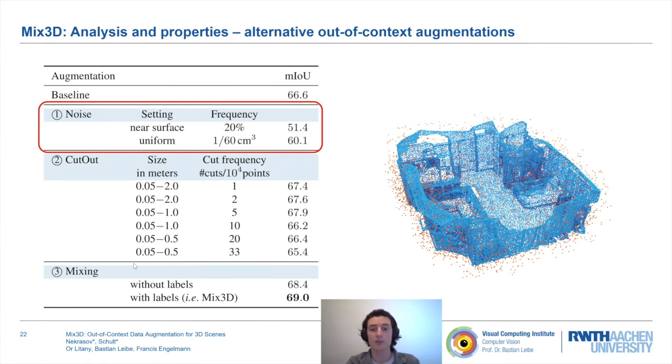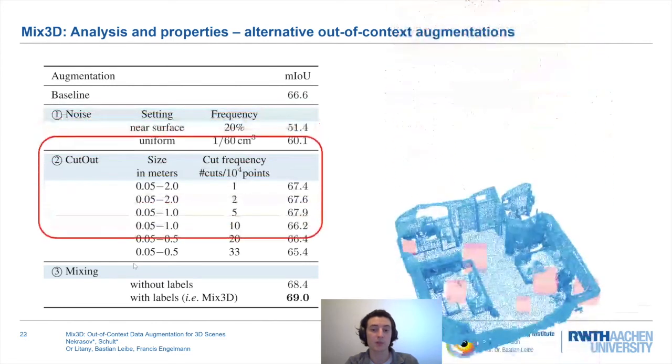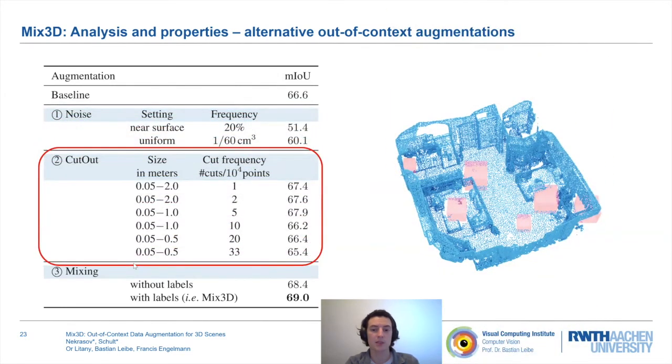Next, we adopt cutout from the image domain and remove points that fall into randomly sampled cubicle chunks. This resembles a thinning-out effect of the context level, which reduces the risk of overfitting to small training set-specific contextual features. The experiment shows that cutout is sensitive to the parameter choice and cannot match Mix3D performance.